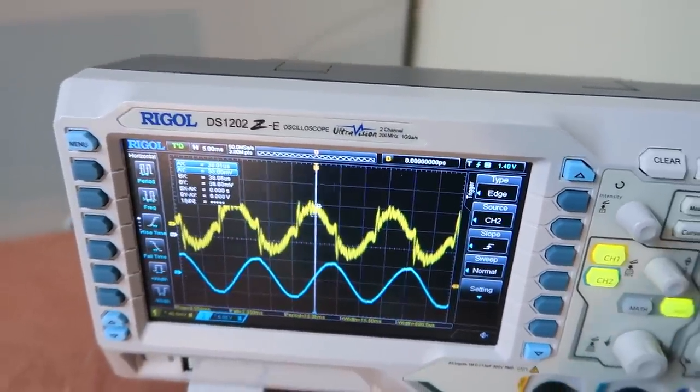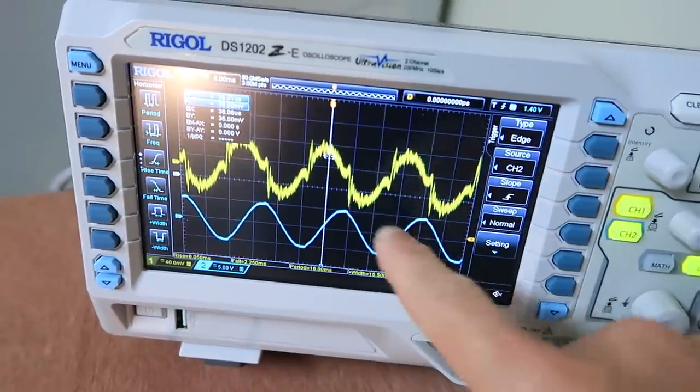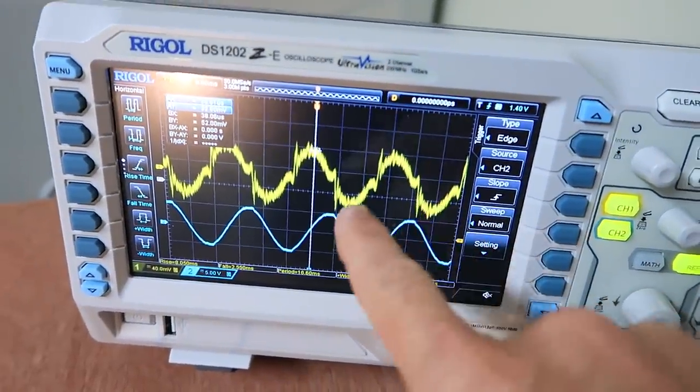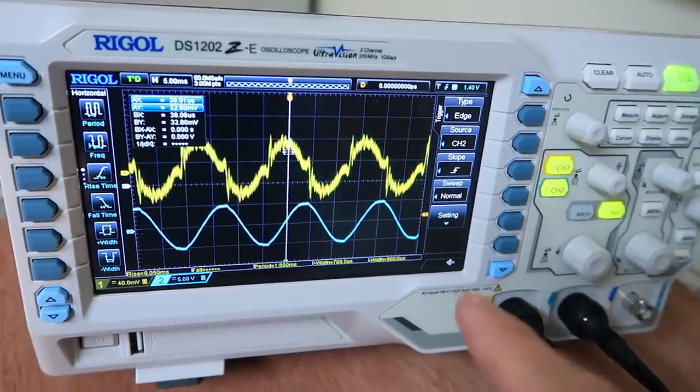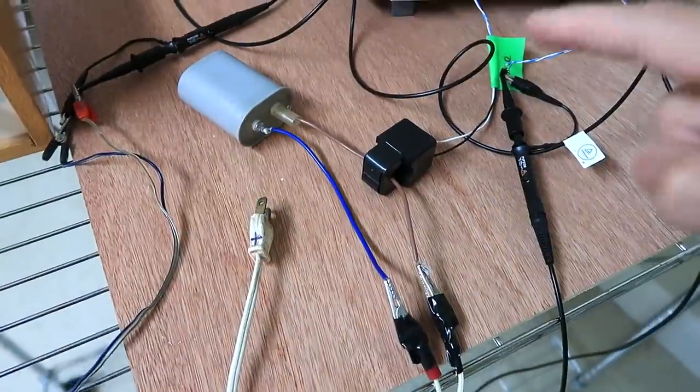But first I figured I'd check that signal with a scope, and I'm getting this very wobbly, sort of sine wave-like signal, and the mini split's not even turned on.